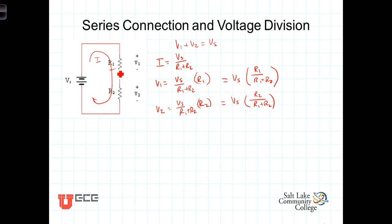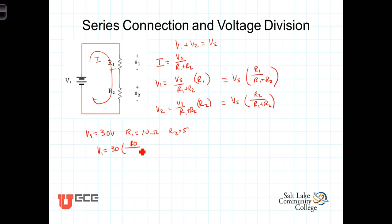Let's put some numbers against this. Let's assume that Vs is equal to 30 volts, R1 equals 10 ohms, and R2 equals 5 ohms. We can then write the expression for V1. V1 is equal to Vs, which is 30, times R1, which is 10 ohms, divided by R1 plus R2, or 10 plus 5 ohms. That's 30 times 10 over 15, which is 2 thirds, so V1 is getting 2 thirds of the total voltage, or 20 volts.